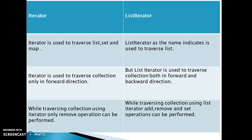The third point is what operations we can perform on iterator and list iterator. In iterator, while traversing through the collection, we can perform only remove operations — that means we can only remove the object from the collection. But by using list iterator we can add, remove, and replace objects while traversing the collection.